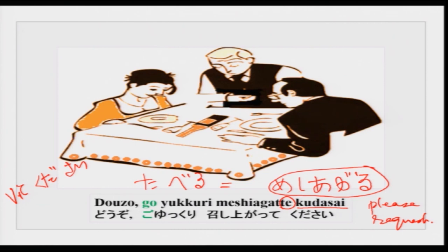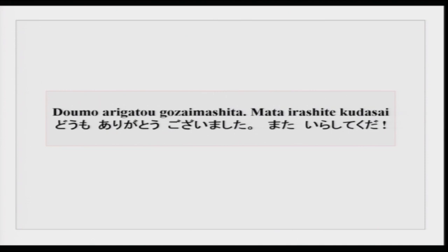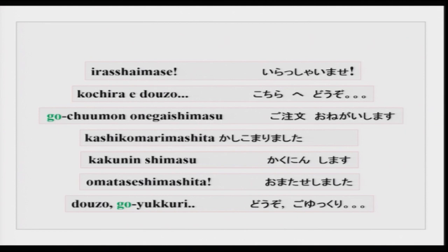There is something very important that happens once you have finished eating and are about to leave. The staff would say domo arigatou gozaimashita, mata irashite kudasai. This phrase is generally used by the people of the mise, the restaurant, when you are leaving. In a Japanese restaurant they will all come out, bow, and say domo arigatou gozaimashita, mata irashite kudasai — please come again. You could smile and reply with arigatou or arigatou gozaimashita.